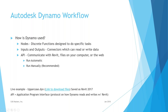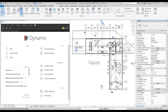Now I'll switch over to my other screen where I have a Revit project set up. This is one of the sample projects that I adjusted slightly. All example files are saved to Revit 2018 in case you are using an older version. Right now I'm using it in 2018.3.